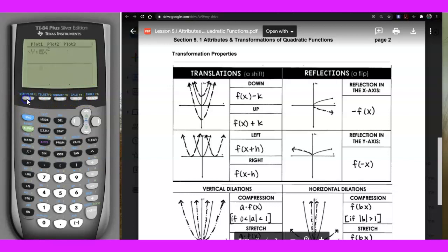So let's predict what do you think is going to happen when the negative is inside the parentheses? What happens if the negative is inside the parentheses? So think about what could happen. I'm going to go ahead and graph it. That's correct. It's a reflection over the y-axis.